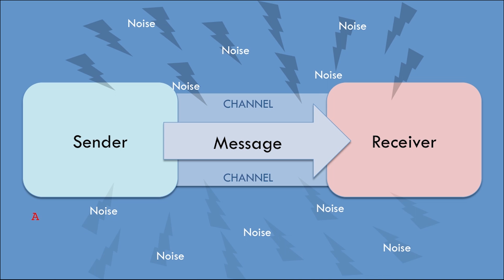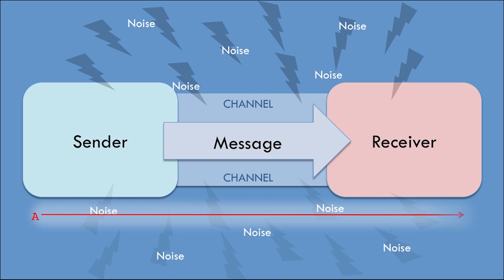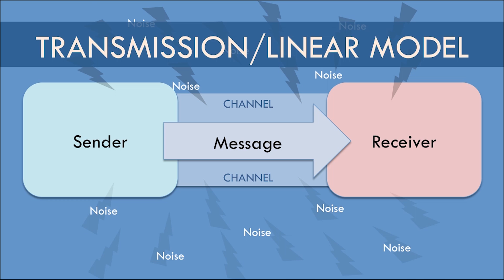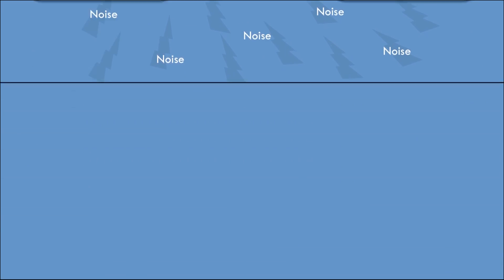The reason they call it a linear model is because it always starts from point A and goes to point B in a linear fashion. That's the transmission or the linear model of communication.